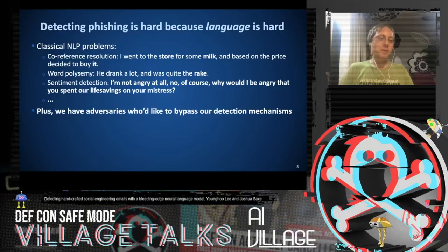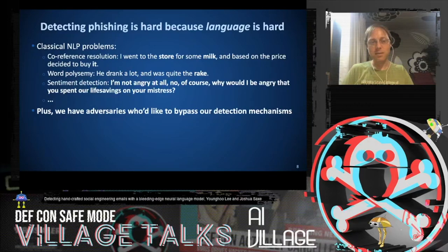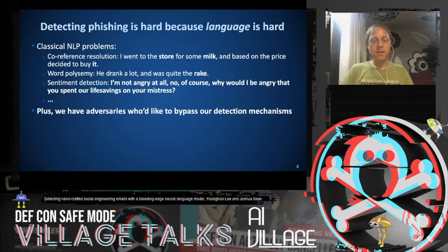To solve phishing means we need algorithms that can make sense of language — and making sense of language is hard, as these three problems demonstrate. A good solution to the phishing problem would, as intermediate steps to detecting a phishing email, be able to solve these problems somewhere in the depths of its intermediate representation. We also have adversaries who'd like to bypass our detection, which adds further challenge.